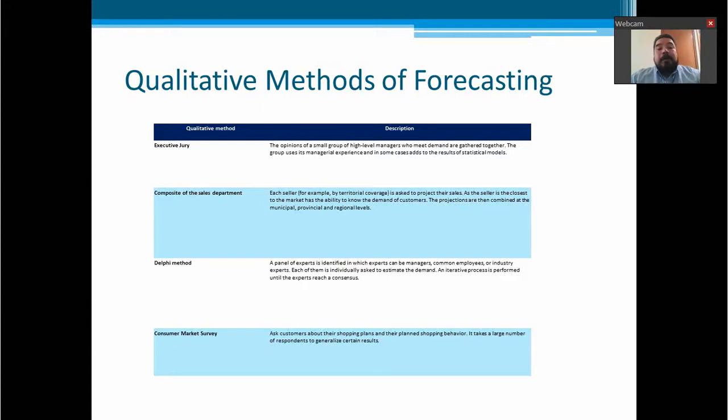There also can be a composite of the sales department, where each seller, for example by territorial coverage, is asked to project their sales. As the seller is the closest to the market, they have the ability to know the demand of the customers. The projections are combined at the municipal, provincial, or regional levels, depending on the area that every seller covers.